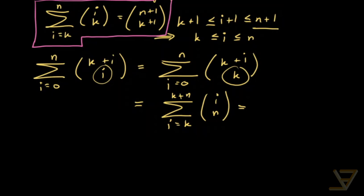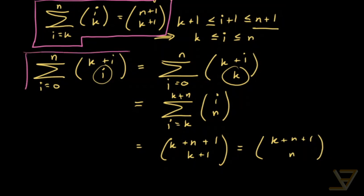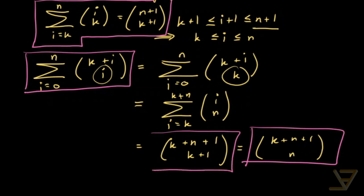is equal to k plus n plus 1 choose k plus 1. And that is equal to, by symmetry again, k plus n plus 1 choose n. So this is our reverse identity. We have this on the left and we have this on the right. Equivalently we can use this as well.